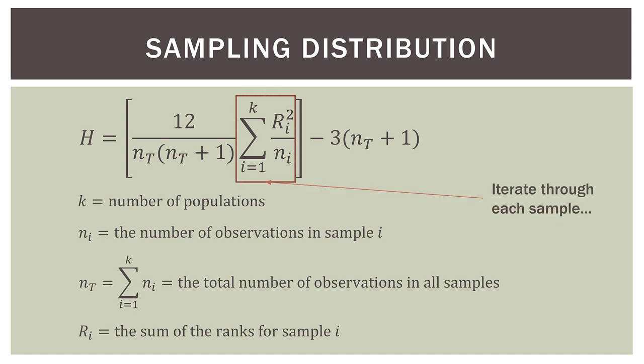What the summation is doing is iterating through each sample, taking r squared — the square of the sum of the ranks — divided by the number of observations, and doing that for each of our three stores. That's all that means, and when we go into Excel you'll see how it works.